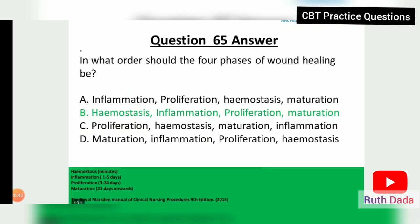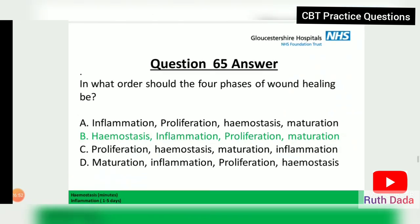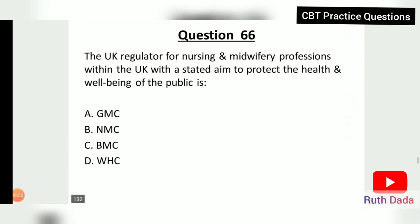Question 65: In what order should the four phases of bone healing occur? Hemostasis occurs in minutes; inflammation from one to five days; proliferation from three to 24 days; and maturation takes 21 days and onwards.